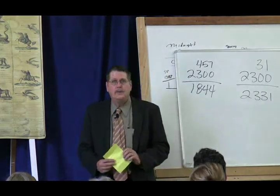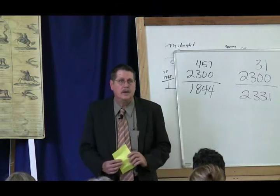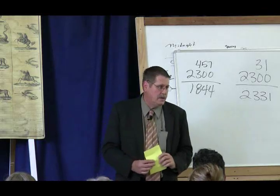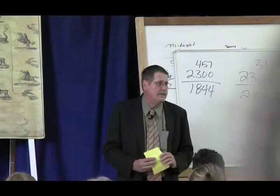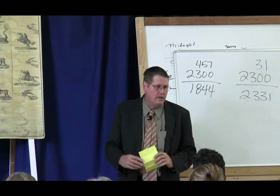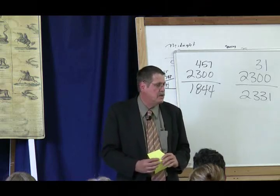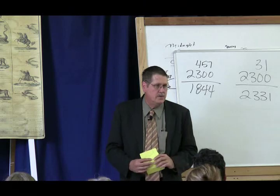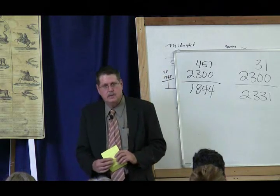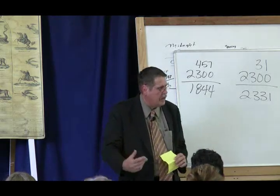When I address the distinction between who the 144,000 are in relation to Adventists and not Adventists, the way that I approach it is I start in the seals. And I start by pointing out that the first four seals parallel the first four churches. It's repeated and enlarged. The first seal, the white horse parallels Ephesus, the red horse parallels Smyrna, the black horse parallels Pergamos, the pale horse parallels Thyatira.